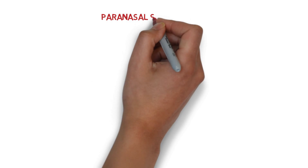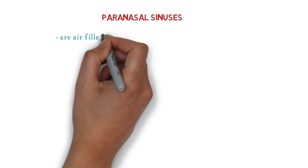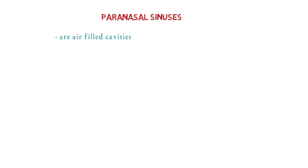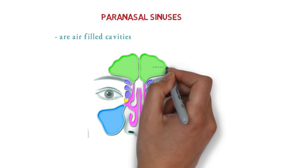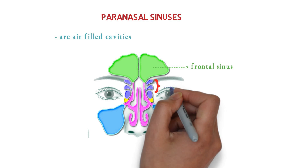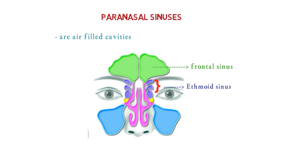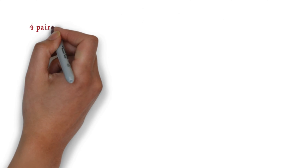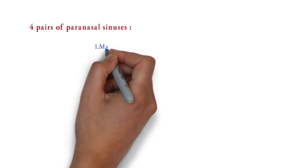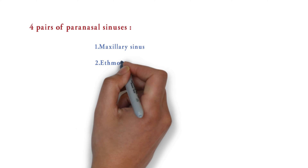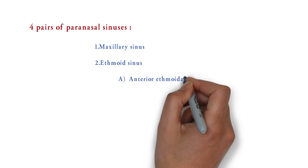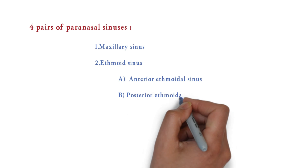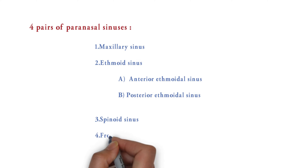Today we are going to talk about paranasal sinuses. Paranasal sinuses are the air-filled cavities in certain bones of the skull. There are four on each side: frontal sinus, ethmoid sinus, sphenoid sinus, and maxillary sinus. So we have four pairs of sinuses. The first is maxillary, the second is ethmoid — divided into anterior ethmoidal and posterior ethmoidal — the third is sphenoid, and the fourth is frontal sinus.